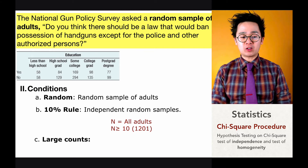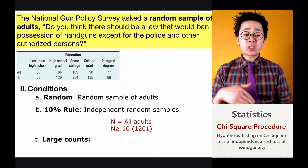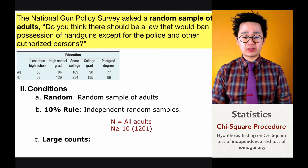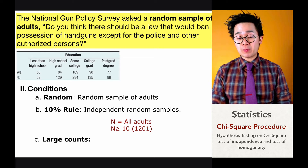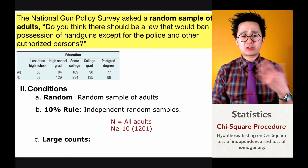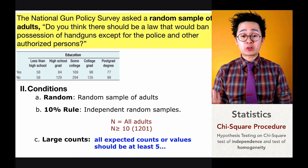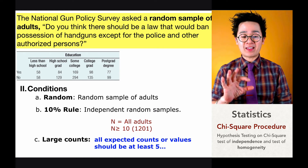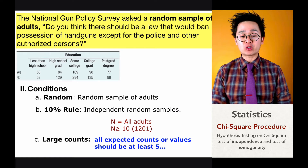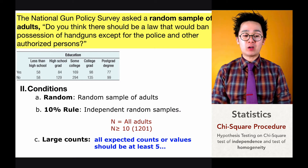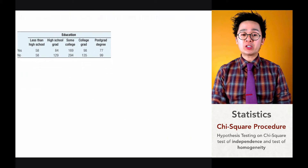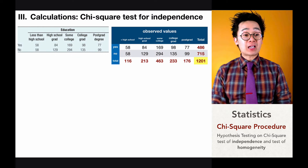For the third condition — large counts — we'll skip it for now, because part of the calculation involves expected values. To avoid computing things twice, we'll go straight to the calculations, verify that all expected counts are greater than or equal to five, and then return to satisfy the large counts condition.